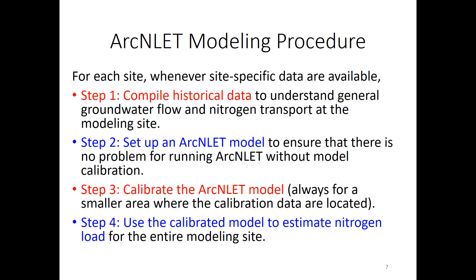This is the general procedure for ArcLit modeling with calibration. Step one: compile historical data so you understand general groundwater flow and nitrogen transport at the modeling site. Step two: set up the ArcLit model to ensure there is no problem running the model without calibration. Step three: compare simulation results with data and conduct model calibration — normally for a small area near calibration data locations to save computational cost. Step four: use the calibrated model to estimate nitrogen load for the entire modeling site.